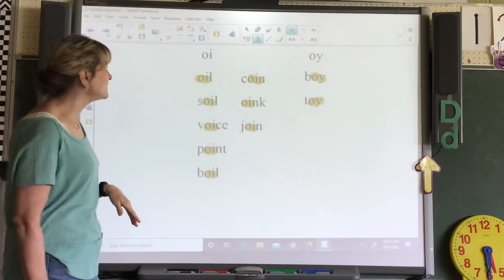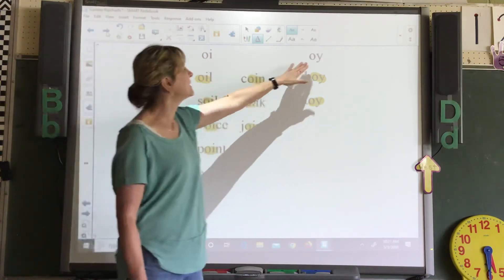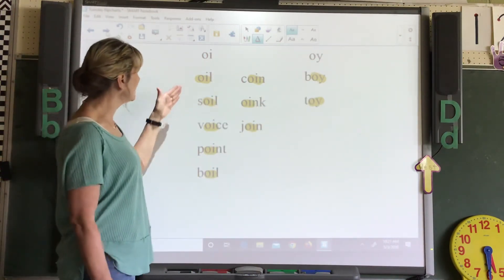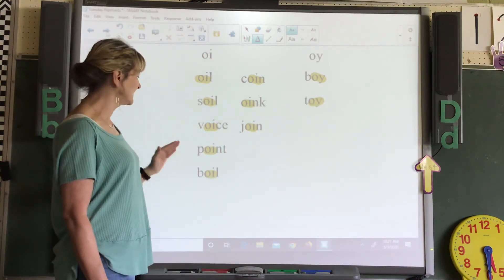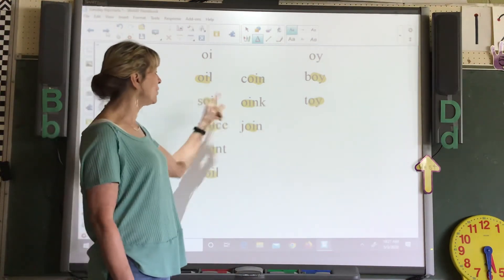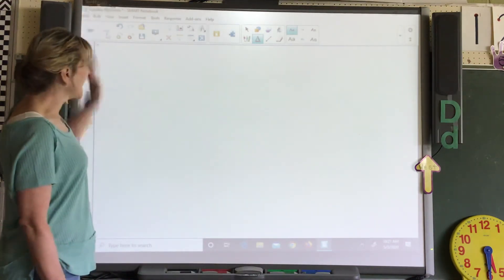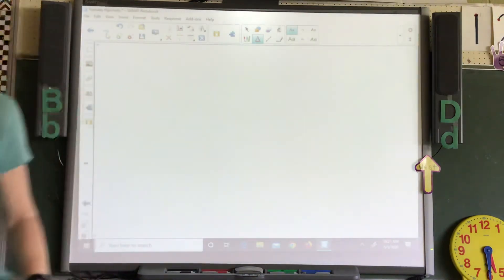The oi sound. Remember, it can be spelled with o-i or o-y. We've got oil, soil, voice, point, boil, coin, oink, join, boy, toy. And that's it for our Tuesday Flip Charts.